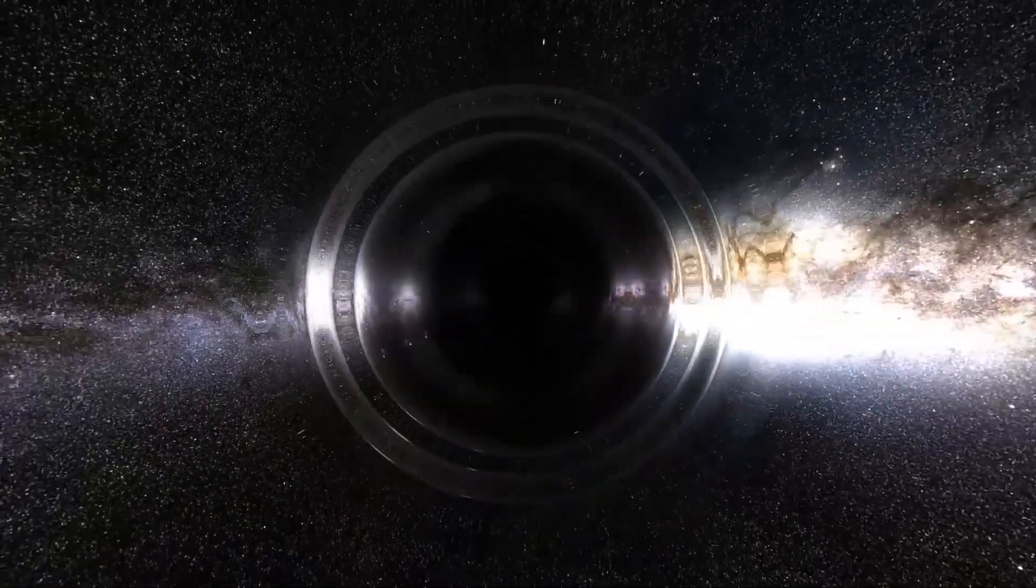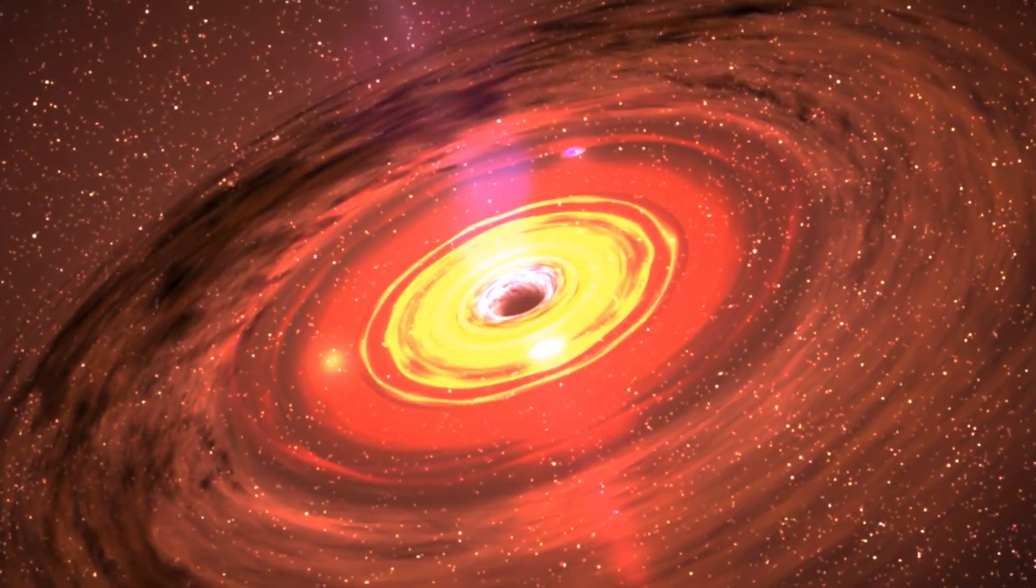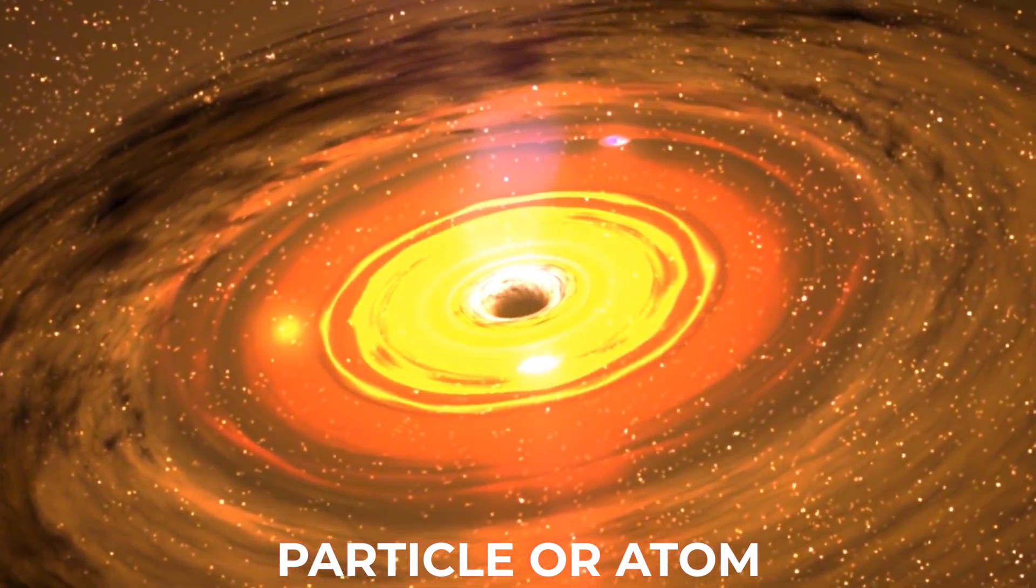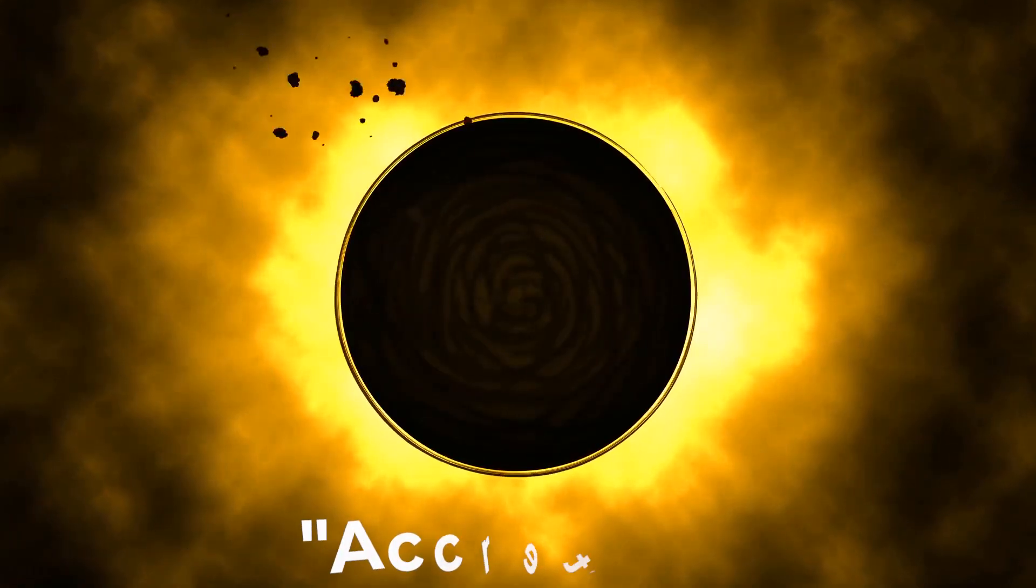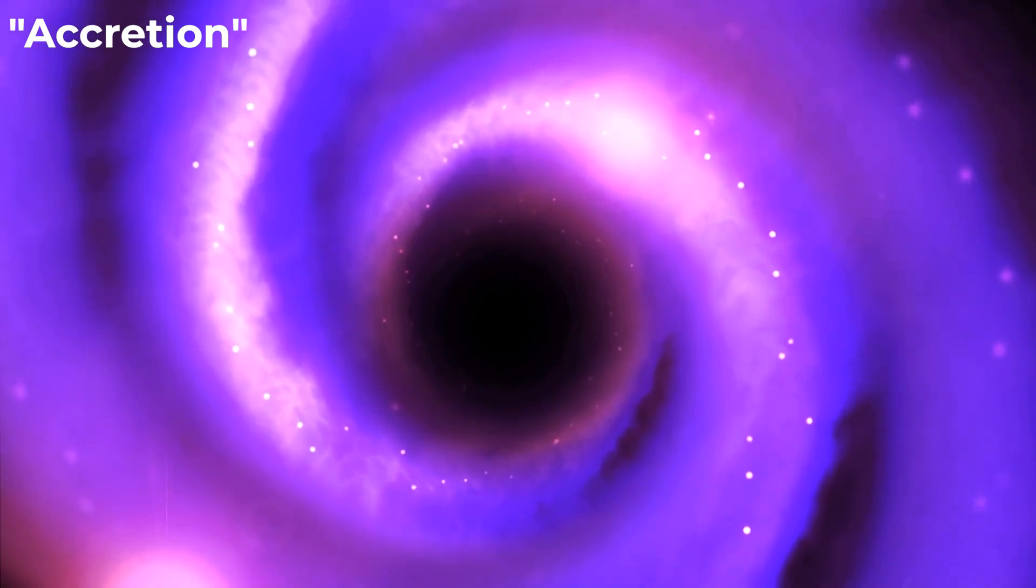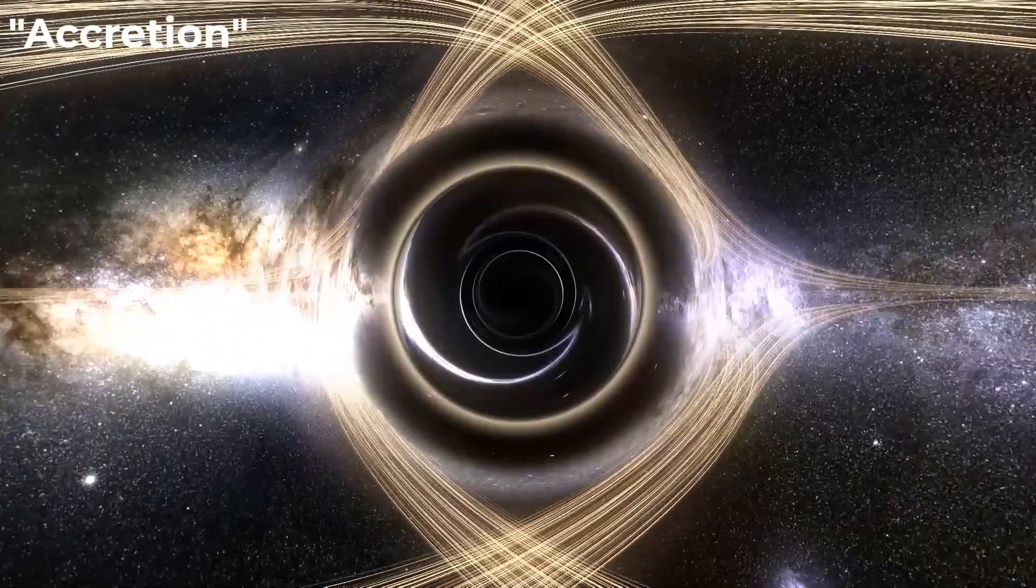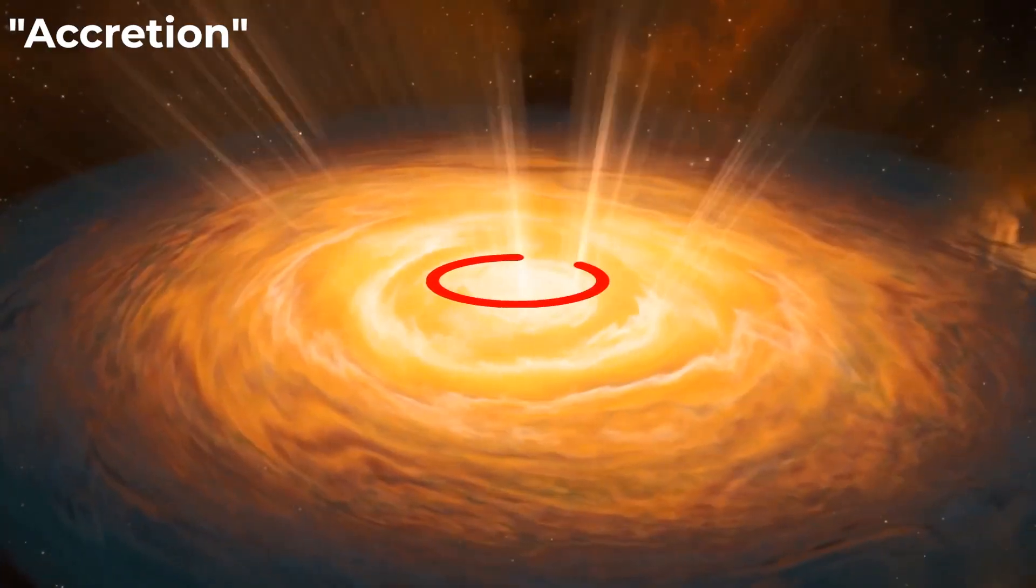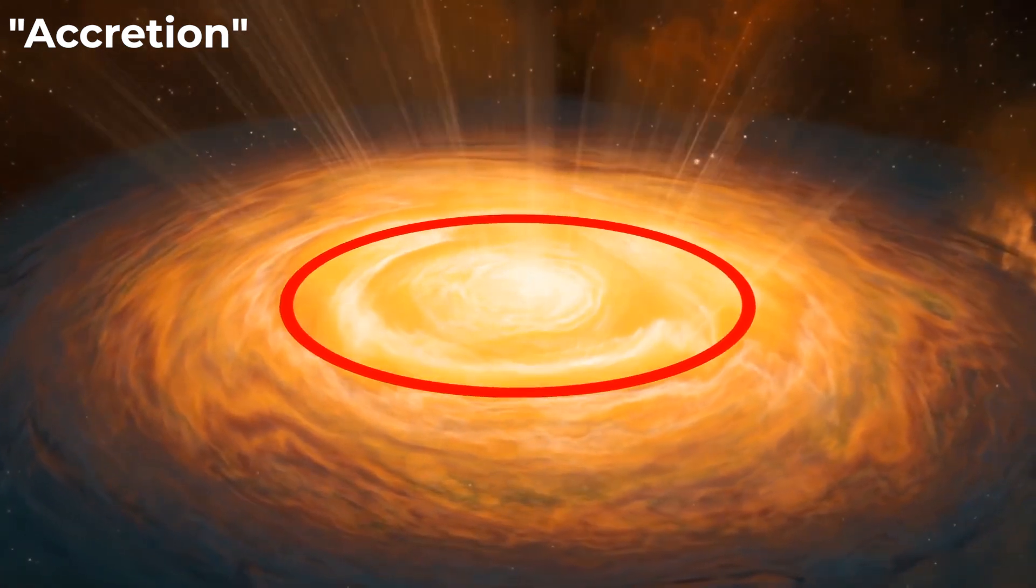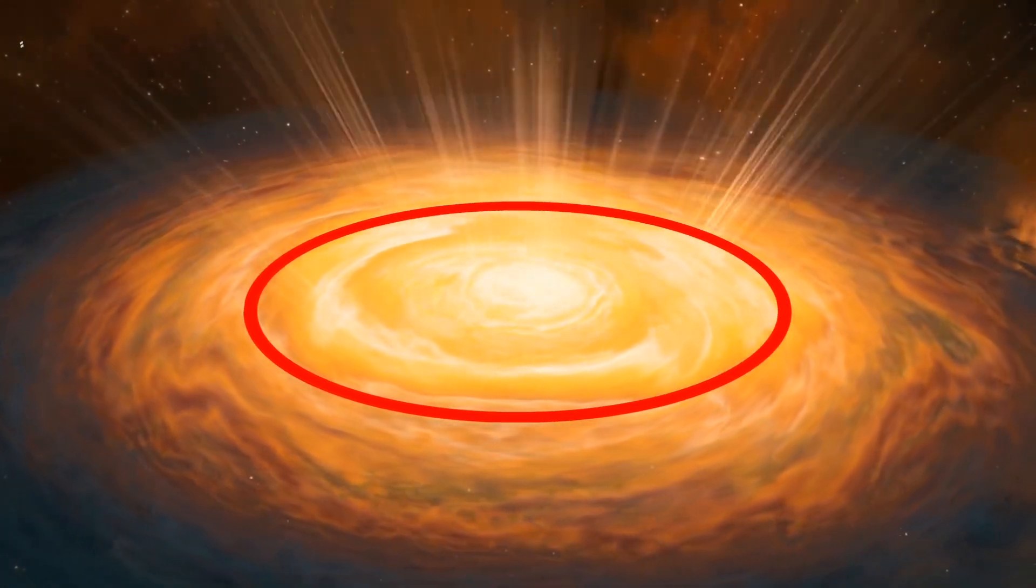The only way for a black hole to grow is by absorbing matter and energy from the surrounding area. This process is called accretion and it's similar to how a star forms by collapsing gas clouds in space. This usually happens when stars orbit too close to the black hole. The black hole in turn pulls material off of the stars. In such scenarios, a particularly massive black hole could eventually destroy its galaxy if it grows larger than all the stars combined.